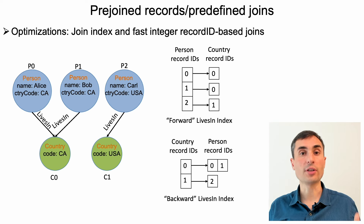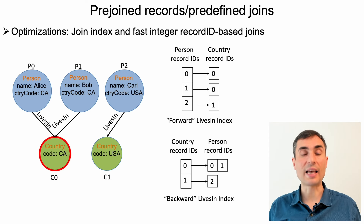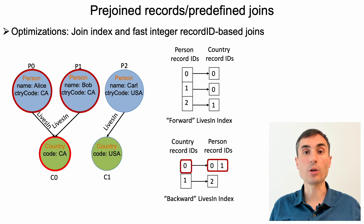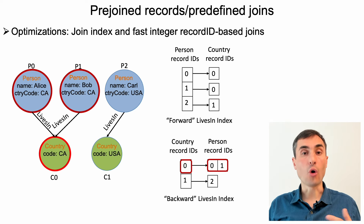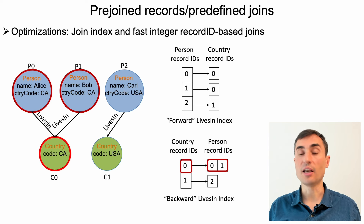When you insert relationship records and pre-define your joins, systems can do several optimizations unavailable with value-based joins. For example, systems can build adjacency list indices that store for each node U the record IDs of other nodes it is connected with, allowing constant-time access to all neighbors during query processing. Additionally, all joins over relationships happen using integer record IDs, which are faster than joins over strings used in value-based joins. I hope you found this history interesting and can see the deep connections between modern graph and relational databases and some of the oldest databases in history.